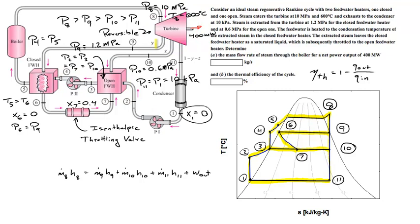Three other relationships you have to work with are the parameters Y, Z, and the fraction of steam leaving the low-pressure bleed. M_dot_9 equals Y times M_dot_8, and M_dot_10 equals Z times M_dot_8. Y and Z are the fractions of steam leaving the high-pressure and low-pressure bleeds, and the balance of it leaves as low-pressure steam: M_dot_11 equals (1 minus Y minus Z) times M_dot_8.